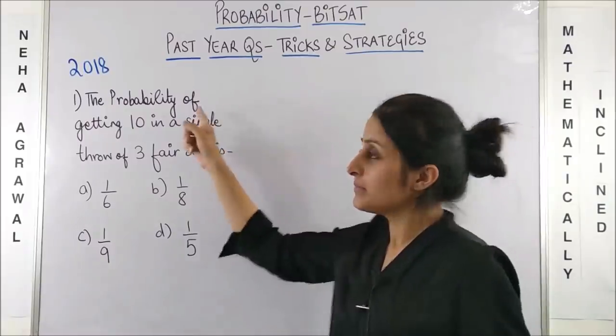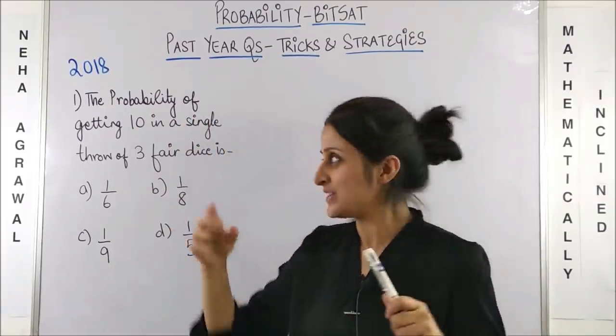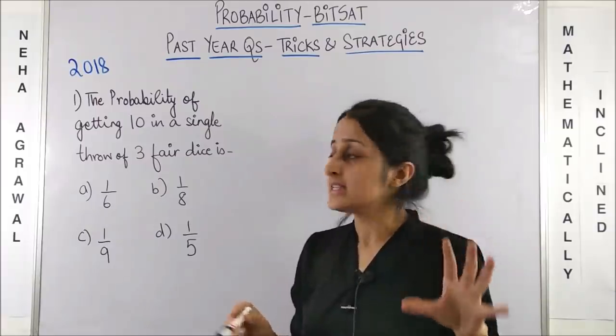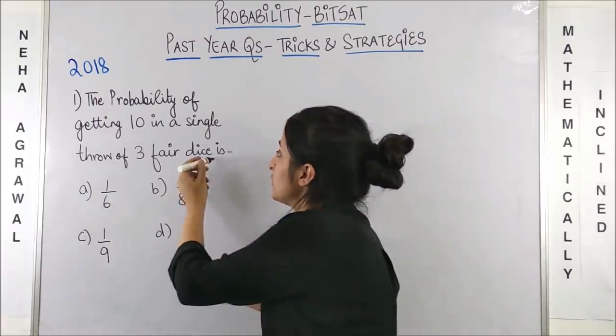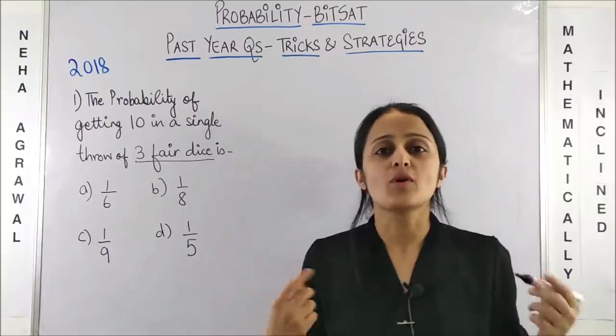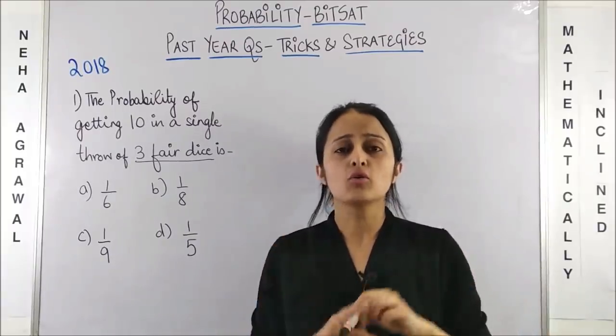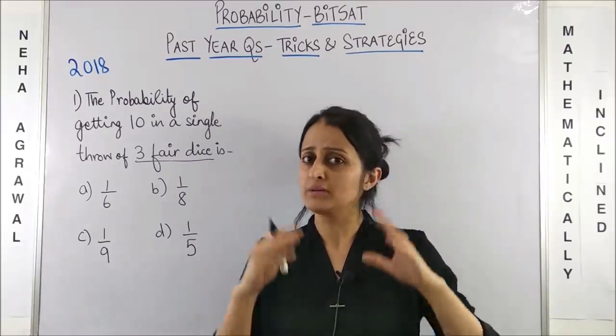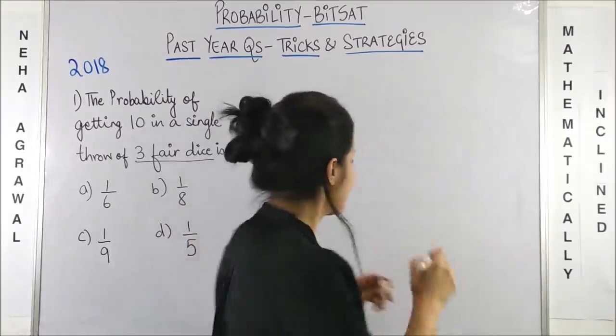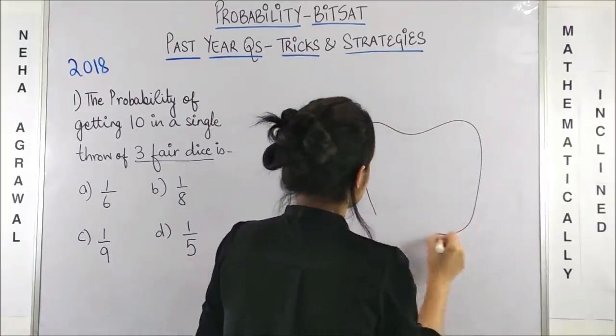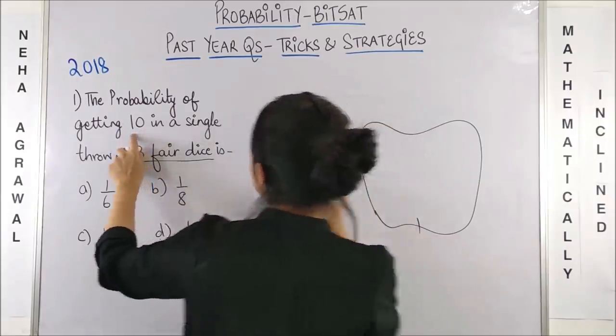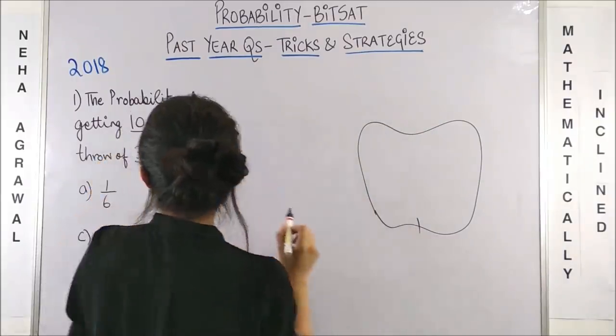Coming to the very fresh question which came in 2018, the probability of getting 10 in a single throw of 3 fair dice is what? Well, you can go with your conventional way but then I will definitely go the magic apple way. Yes, so what I am going to do is draw my magic apple here and we need the sum to be 10.